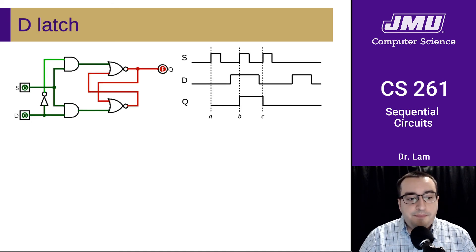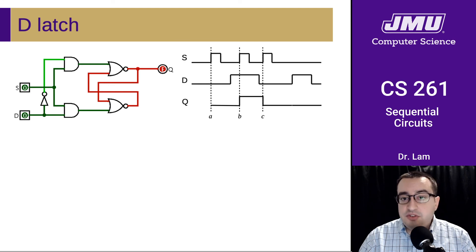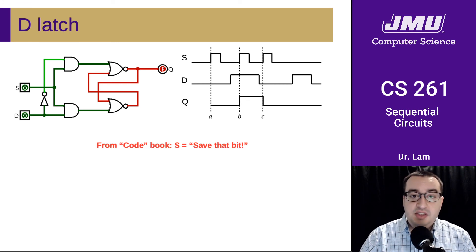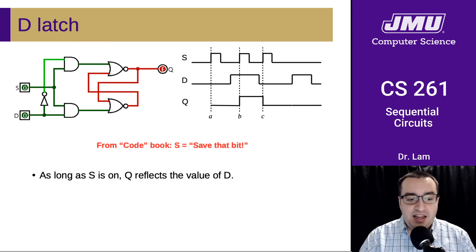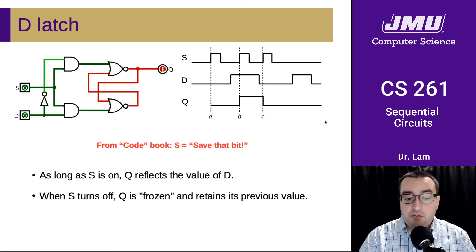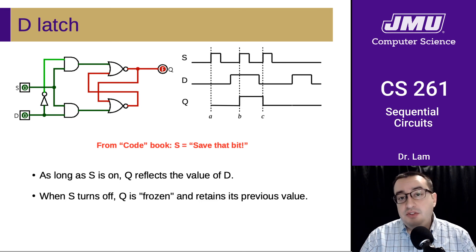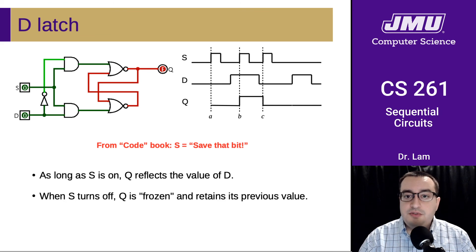That was one kind of latch. Another kind that you'll explore more thoroughly in the lab is the D-latch. This is the latch you may remember if you read the code book I recommended over the summer. We think about S as being the save bit. As long as S is on, Q will change to reflect the value of D. Once S turns off, Q is frozen and retains its previous value. This has the property of being easier to reason about than the SR latch, which makes it useful.